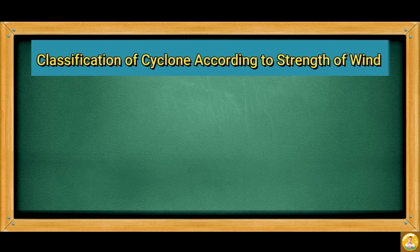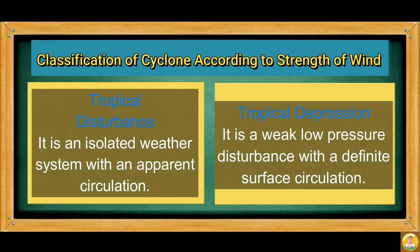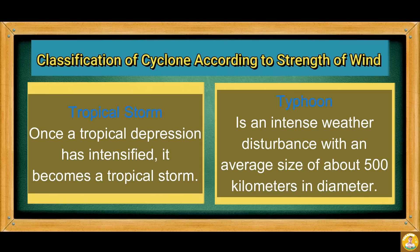Recap — Classification of cyclones according to strength of wind: Tropical disturbance is an isolated weather system with an apparent circulation. Tropical depression is a weak low pressure disturbance with a definite surface circulation. Once a tropical depression has intensified, it becomes a tropical storm. Typhoon is an intense weather disturbance with an average size of about 500 km in diameter.